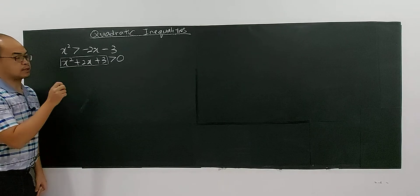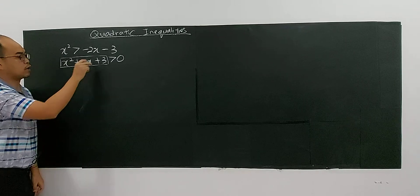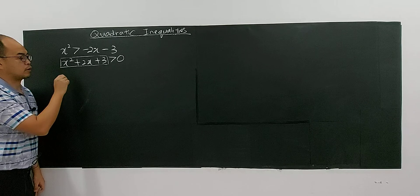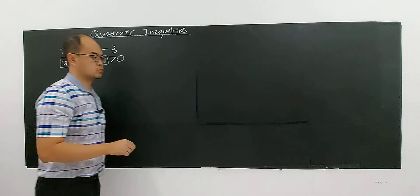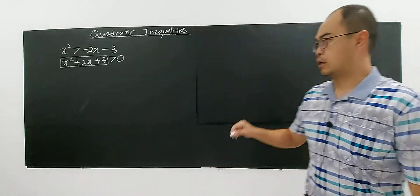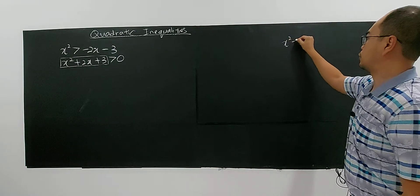The meaning here is, you try to see, x square plus 2x plus 3. We try to complete the square first. We do completing the square.